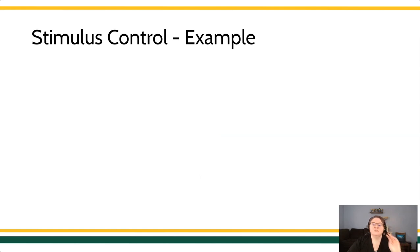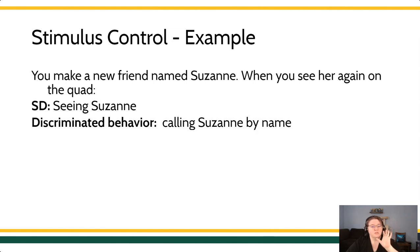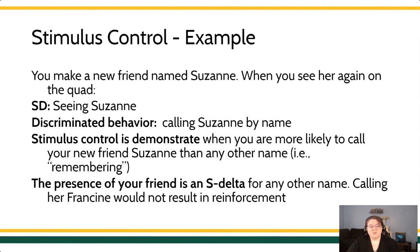Imagine you make a new friend, Suzanne, and you see her on the quad. The SD is that she's physically present as a stimulus in your environment. If you want to hang out with her, you might call out her name. The response is her stopping and making contact. Stimulus control is demonstrated when you're more likely to call her by her name than any other name — calling her Suzanne rather than Janet or Steve. Cognitive psychologists would call that remembering, but we say your behavior is under stimulus control. The presence of your friend is an S-delta for other names — calling her Francine or Steve may not contact reinforcement.